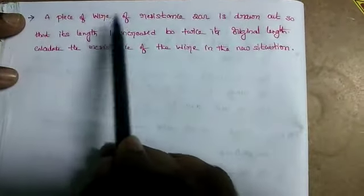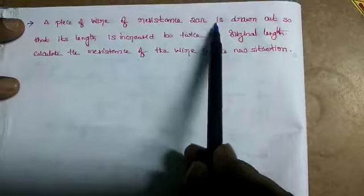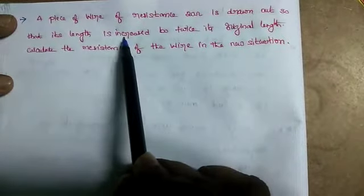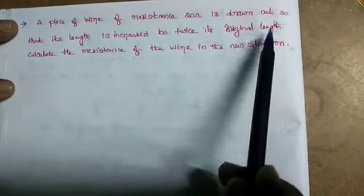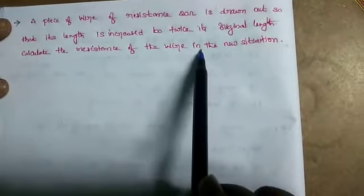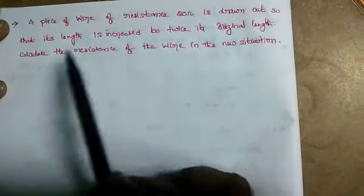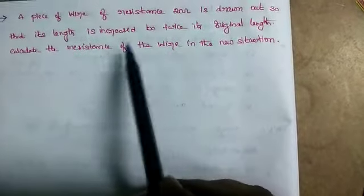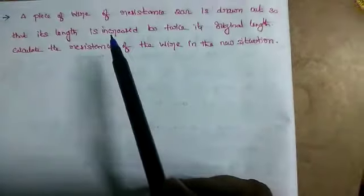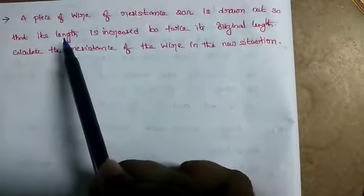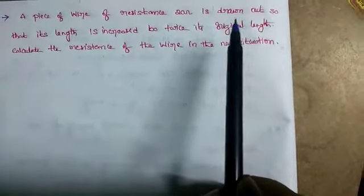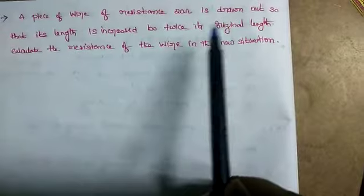A piece of wire of resistance 20 ohms is drawn out so that its length is increased to twice its original length. Calculate the resistance of the wire in the new situation. The original resistance is 20 ohms, and the length is doubled. We need to find the resistance in the new situation.